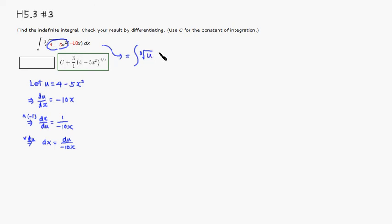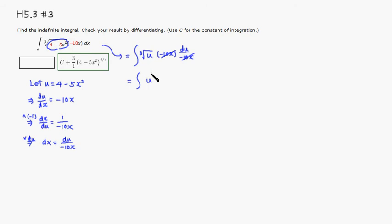The dx is du over negative 10x. You can cancel the x in the numerator and denominator. Also, I don't like cube root notation, so I'm going to rewrite the cube root of u as u to the one-third power, with du.